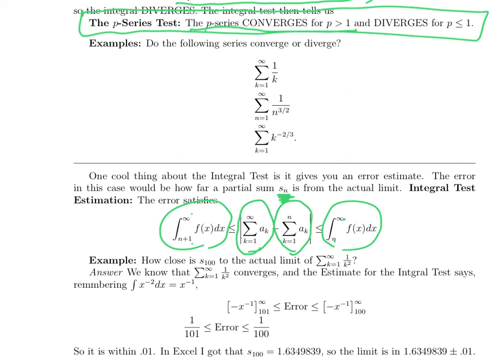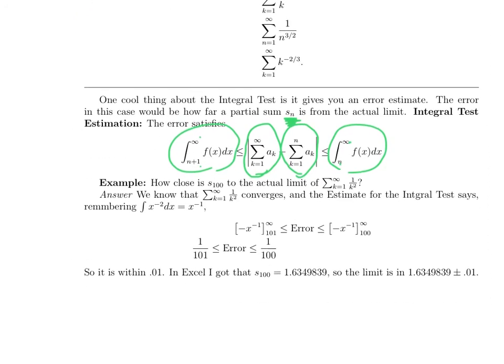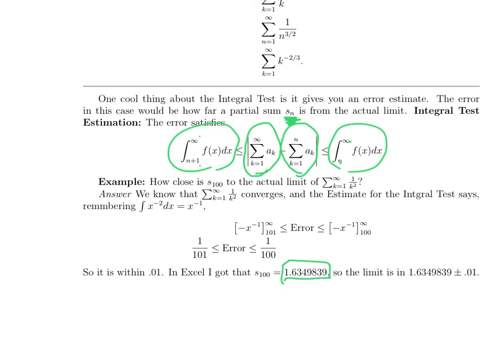So here's an example that I will let you work through to see that this series we were talking about, 1 over k squared, if you take it out to 100 terms, you get this number. And if you integrate 1 over x squared, which we already did, you find that the error is approximately 1 over 100. So this number is within 1 one-hundredth of the actual infinite limit. Okay, stopping there. Have a great day.